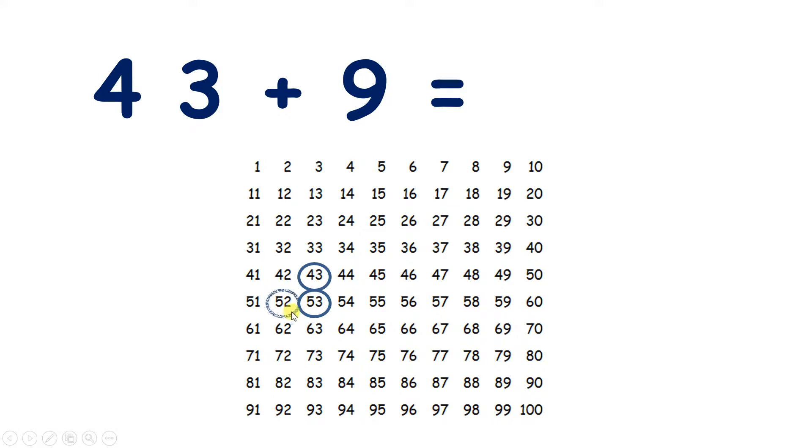We want to add 1 less than 10. So what can we do? Well let's find 1 less than the 10 that we added, and that gives us 52, so 43 plus 9 is 52.